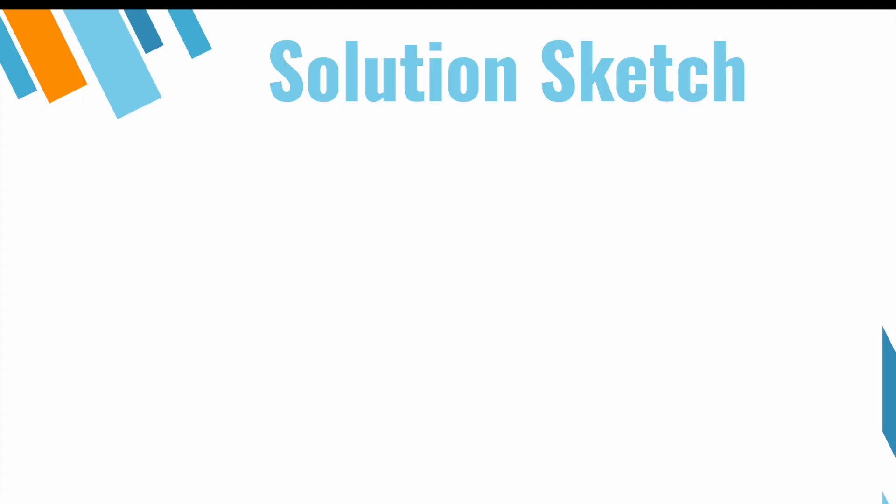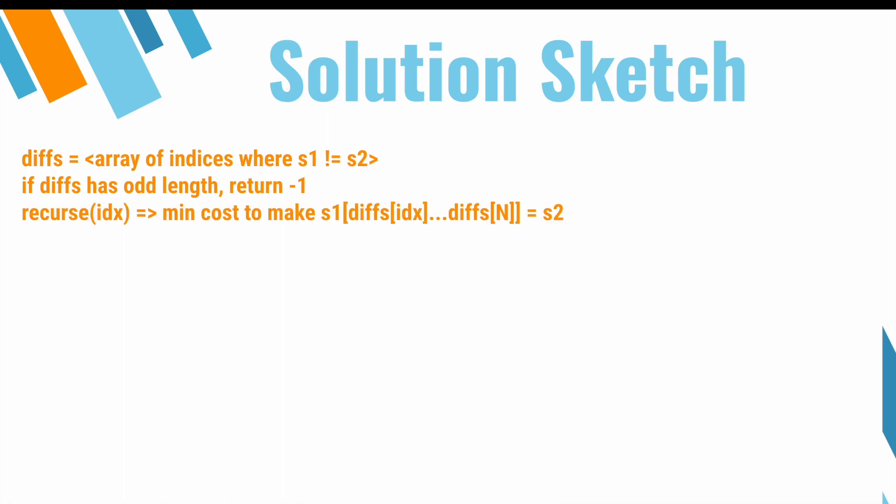Let's sketch our solution. We define an array diffs that contains the array of indices where s1 and s2 differ. If diffs has an odd length, we immediately return -1 because it's impossible to turn s1 into s2. We define a subroutine recurse(idx) as the minimum cost to return s1 into s2 from diffs[idx] to diffs[n], where diffs[n] is the last index where the two strings differ.